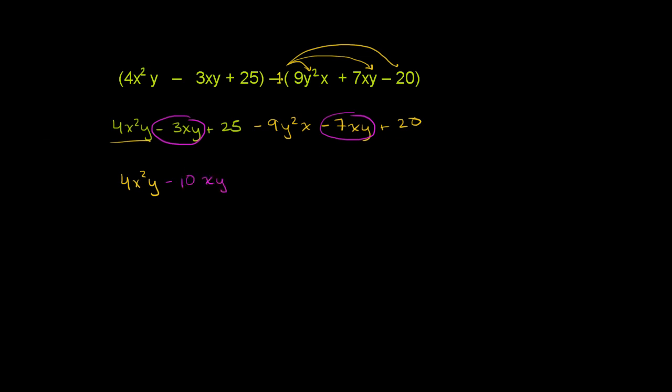And then we have a 25, which is just a constant term, or an x to the 0 term. You could view it that way. And there's another constant term right over here. We can always add 25 to 20, which gives us 45.